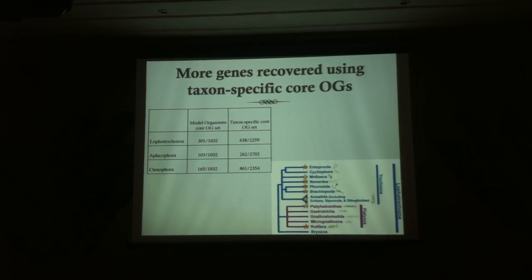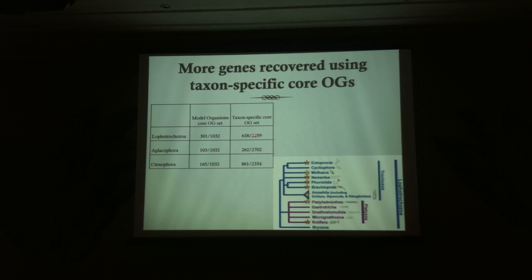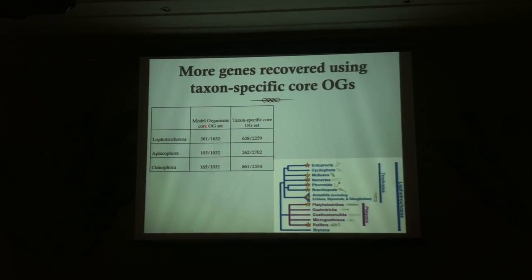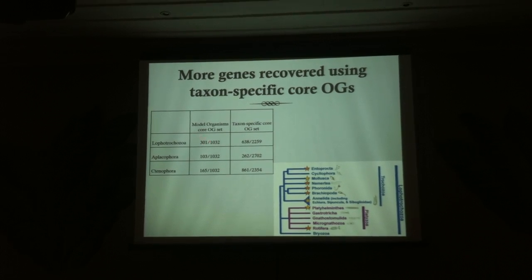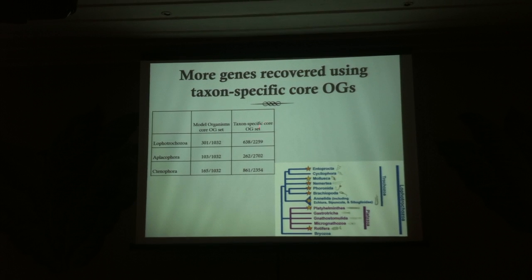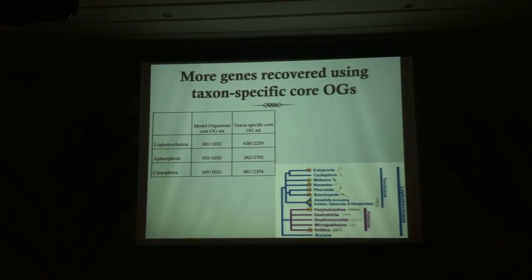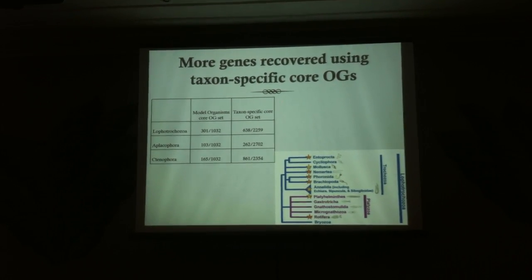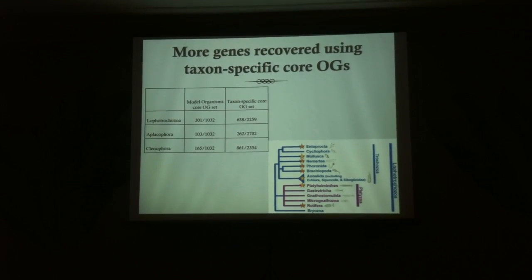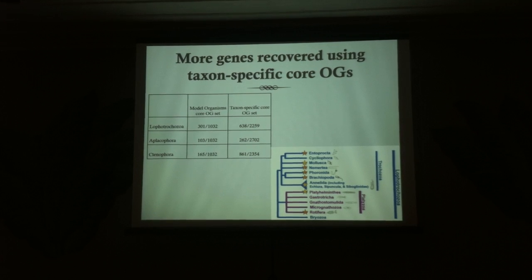We're now at the point where instead of just taking core orthologs, we're developing our own core ortholog sets — we find that this approach recovers many more genes. In the Lophotrochozoa dataset, the core ortholog set had 1,032 genes, and when we put the whole dataset together, we ended up with 301. But if we develop our own taxon-specific core ortholog set, we can pretty much double those numbers, bringing a lot more data to bear on these questions. We've done this for several studies using an all-versus-all BLAST in OrthoMCL.